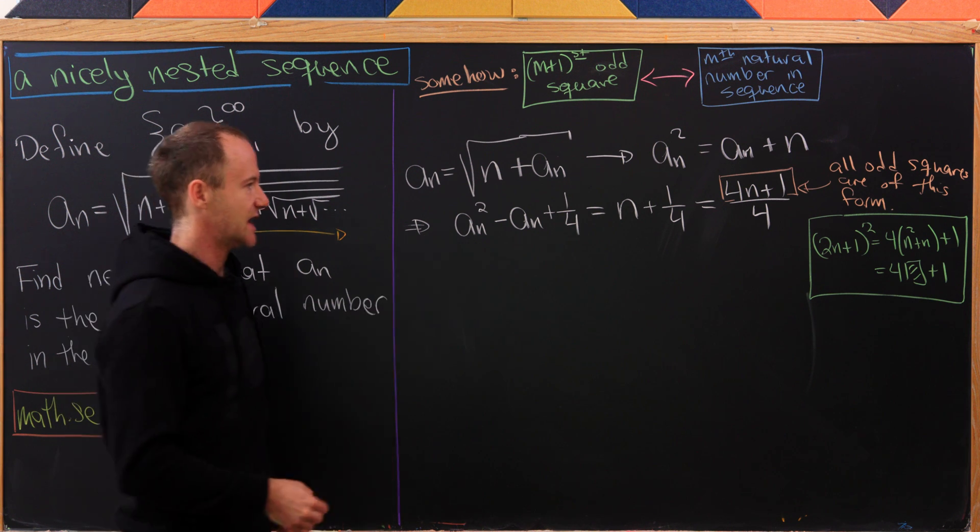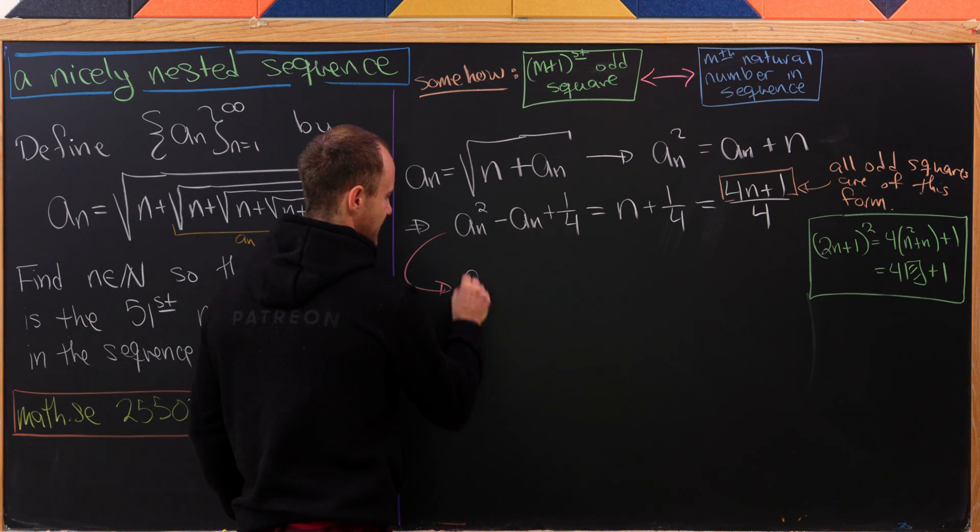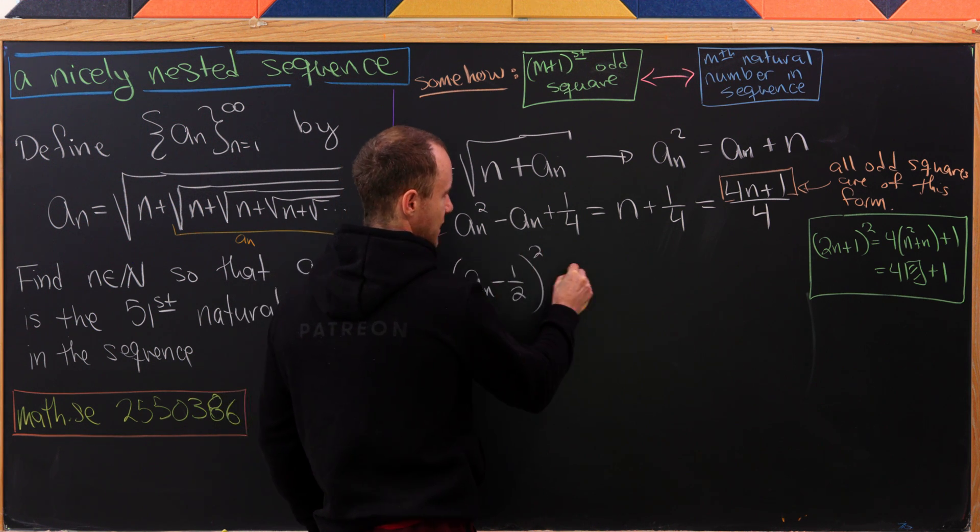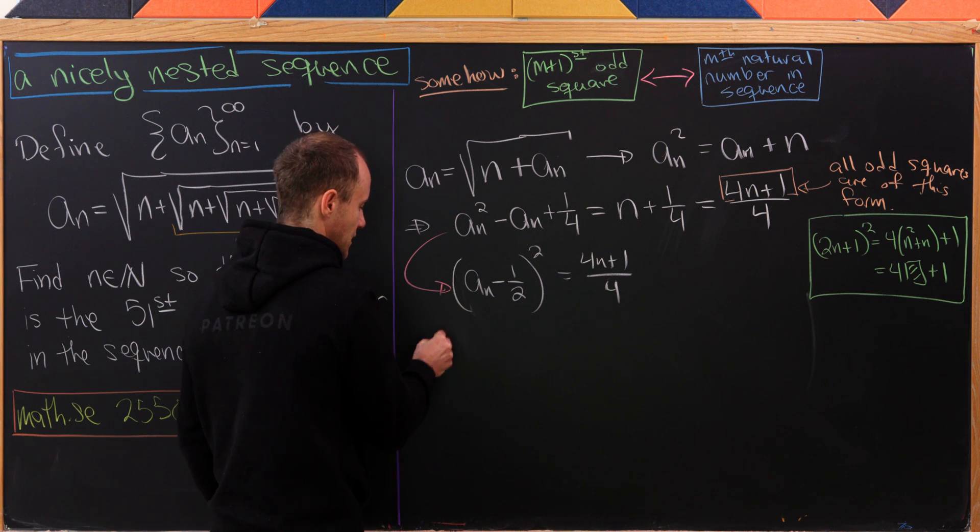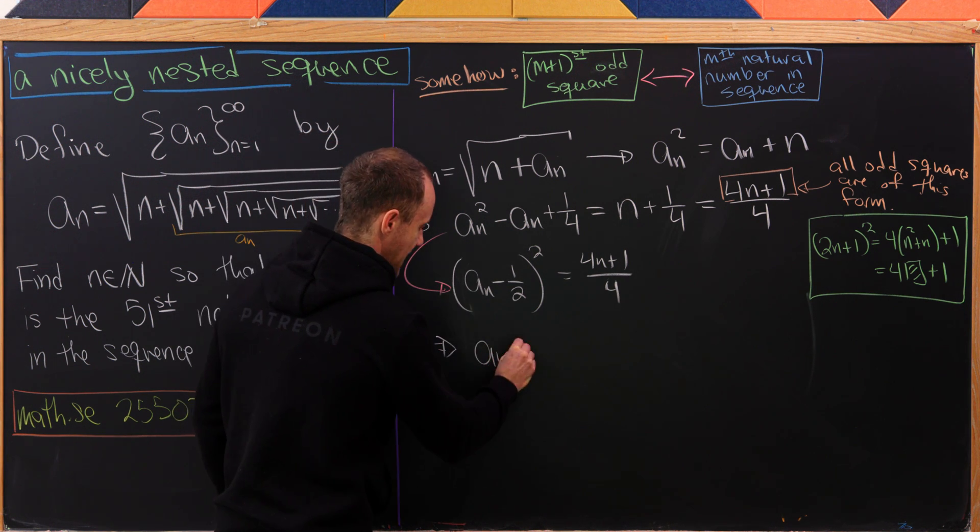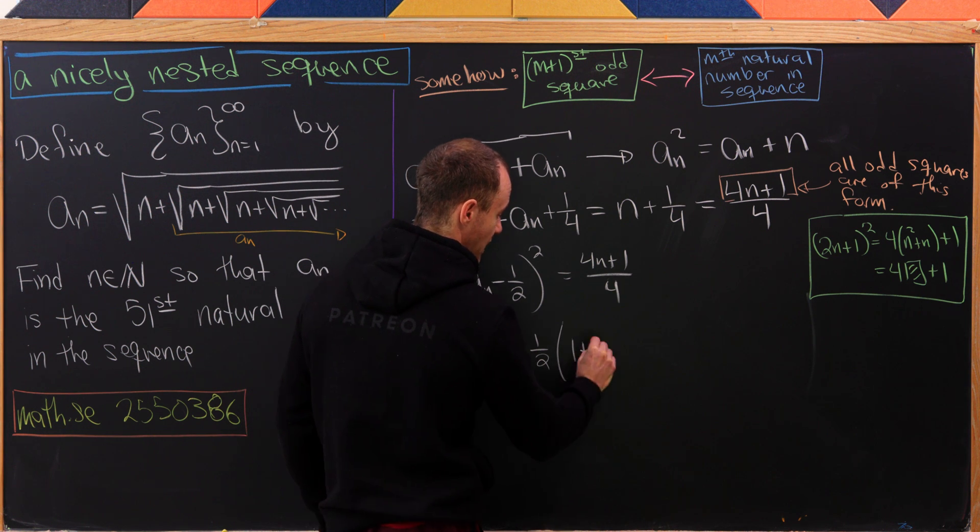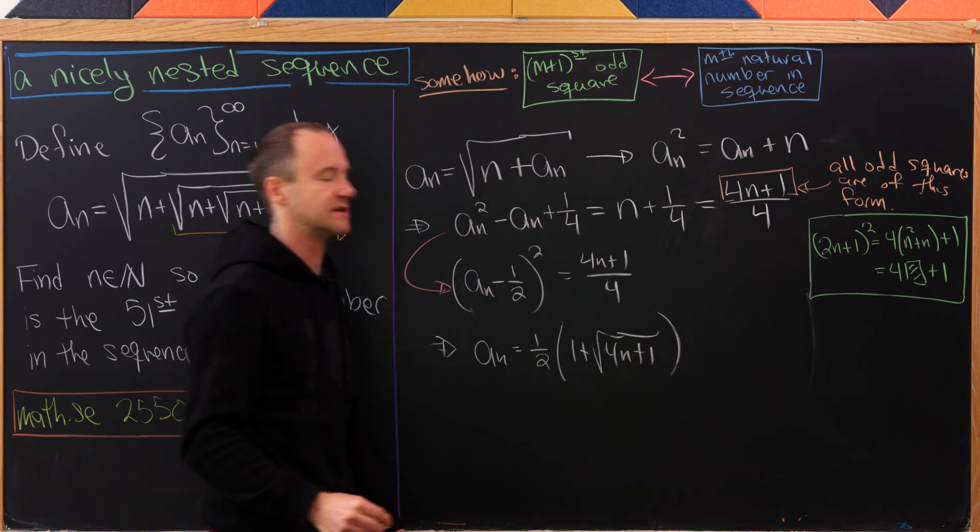Now let's factor the left-hand side. That'll leave us with (a_n - 1/2) squared equals (4n + 1)/4. We can take the square root, leaving us with a_n equals (1/2)(1 + √(4n + 1)) after moving some things around.